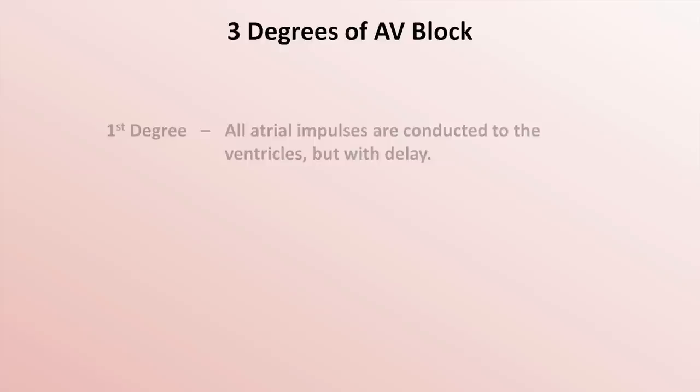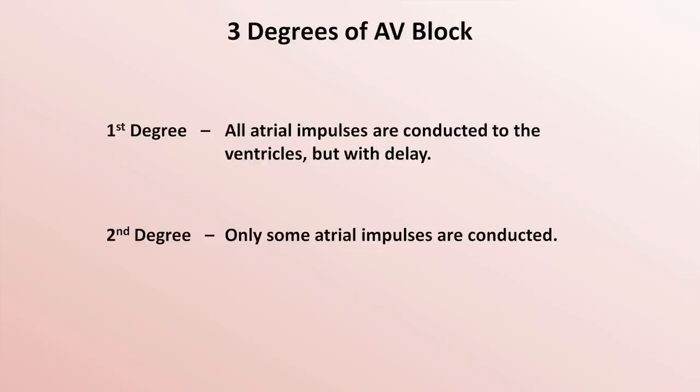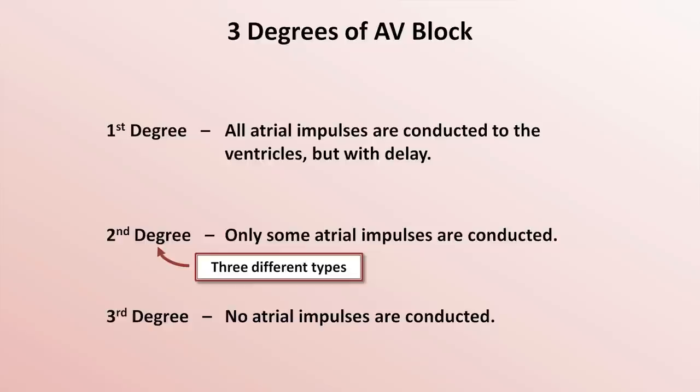The first level of classification is called degrees, and there are three of them. In first degree AV block, all atrial impulses are conducted to the ventricles but with a longer than normal delay. In second degree block, only some atrial impulses are conducted, and in third degree block, no atrial impulses are conducted. In practice, it's best to consider three different types of second degree block, giving us five overall forms of AV block.